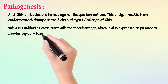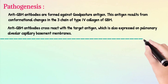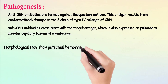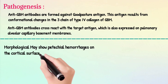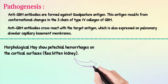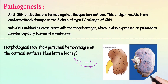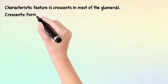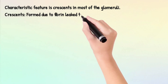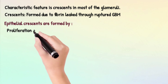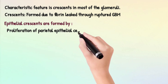Morphologically, the kidney may show petechial hemorrhages on the cortical surfaces, giving a flea-bitten kidney appearance. A characteristic feature is crescents in most of the glomeruli. Crescents form due to fibrin leak through a ruptured GBM, and epithelial crescents are formed by proliferation of parietal epithelial cells plus monocytes and macrophages.